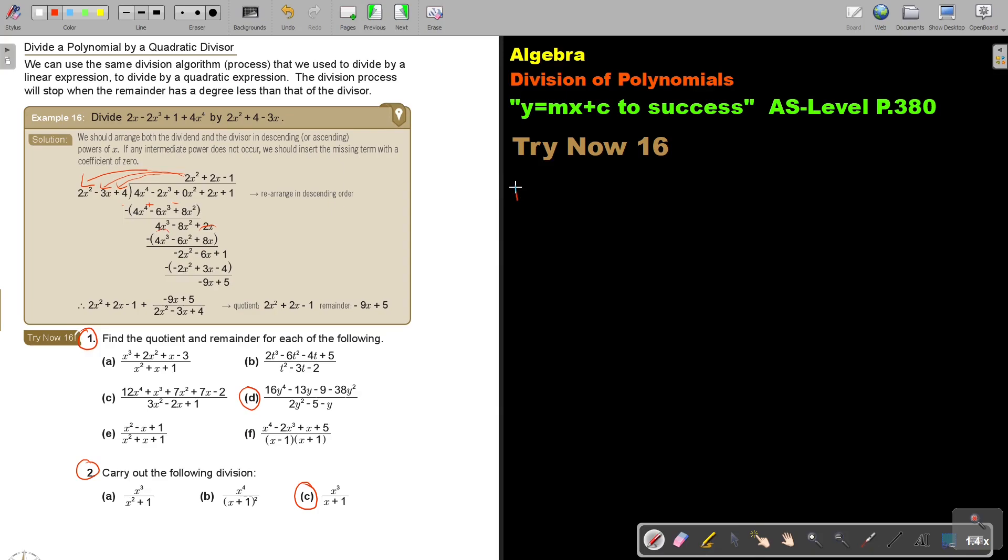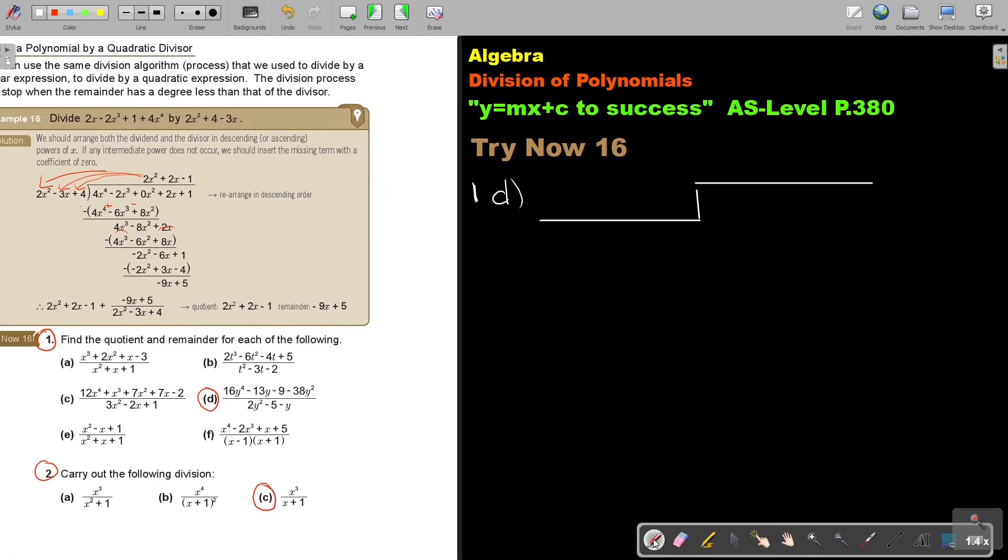Number 1d. And if I write it in, now let's just see. I'm going to make it in descending. Let's just see if my space is enough there. Otherwise, I can just move a little bit. So this is going to be 16y to the power of 4. Then it's plus 0y to the power of 3. Minus 38y square, minus 30y.